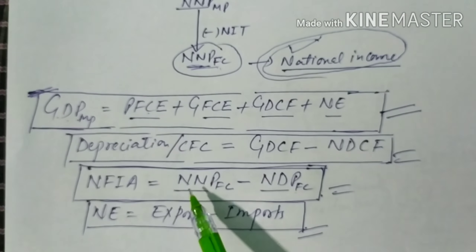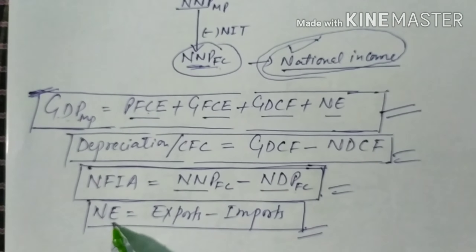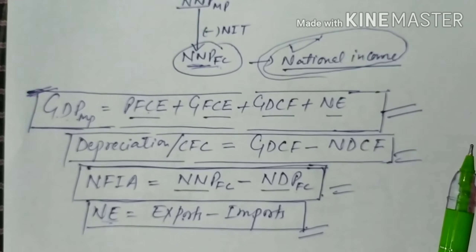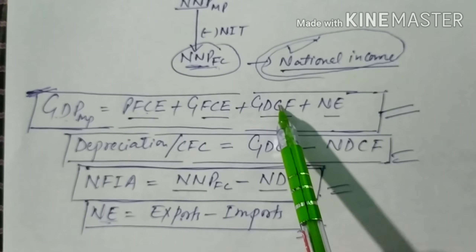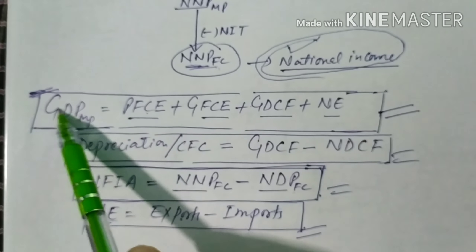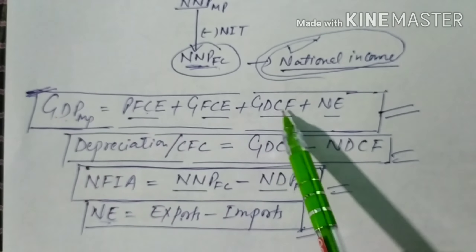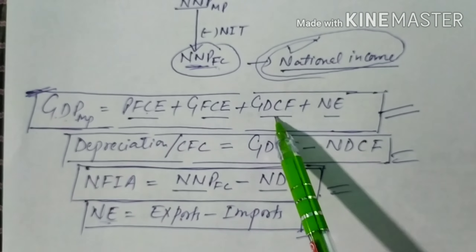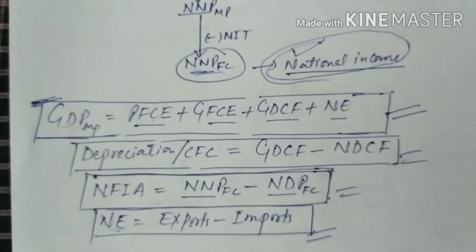If net domestic capital formation (NDCF) is given instead of gross, write NDP instead of GDP in the formula. If you later want to convert from net to gross, simply add depreciation. In the next video we will solve various questions based on this formula. Thank you.